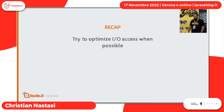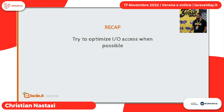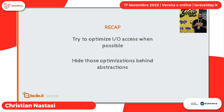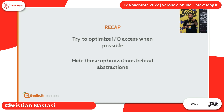Cosa abbiamo imparato: bisogna ottimizzare gli accessi I/O perché sono costosi in termini computazionali. Soprattutto bisogna nascondere queste ottimizzazioni sotto le astrazioni — la logica non deve sapere se sei la cache o qualsiasi altra cosa. È un dettaglio implementativo: l'importante è che la logica sa che se faccio `get` tiro fuori le informazioni, se faccio `add` lo salvo.